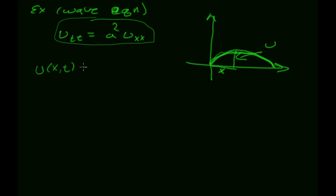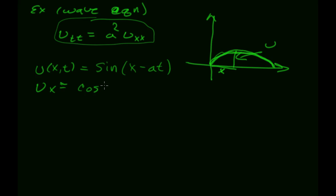So there's u(x, t) — given x and time, I can get the height of the wave. Since the wave is oscillating, we're going to use a sine function: sine of (x minus at). Let's see if that one works as a solution. I need u with respect to x: that's going to change sine to cosine of (x minus at) times the derivative of the inside, which is just 1 — so that's just cosine(x minus at).